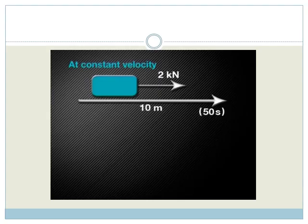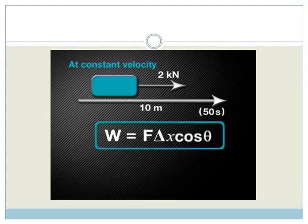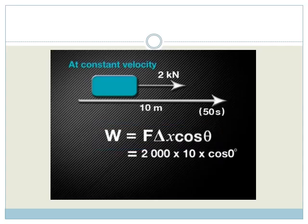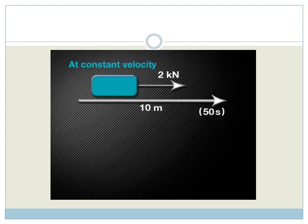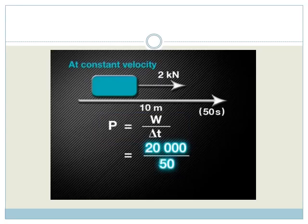To determine work done, we use the equation work equals force times displacement times cos theta. Substituting the given information into the equation, we get 2000 newton (because we first convert from kilonewton) times 10 meters times cos of 0 degrees. This gives us 20,000 joule. Now, to find power, we use the equation power equals total work done divided by time taken. All we have to do is divide 20,000 joule by 50 seconds, which gives us 400 watt.